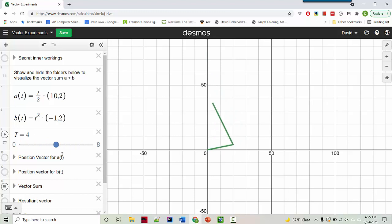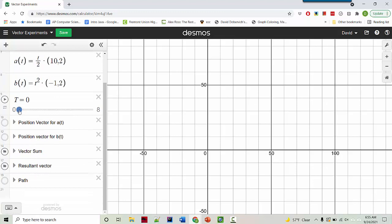There's the vector sum. What happens if we look at the resultant vector? Interesting. So now the resultant vector no longer looks like a straight line. It looks like it's kind of curving. Let's look at the path.